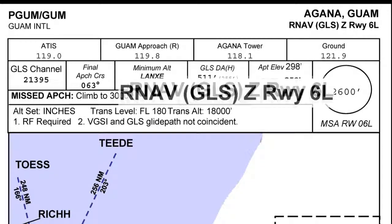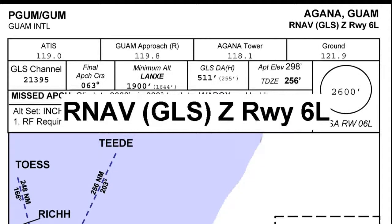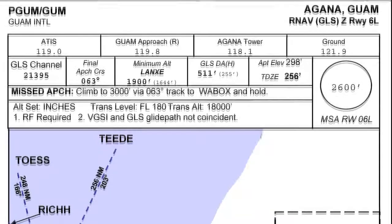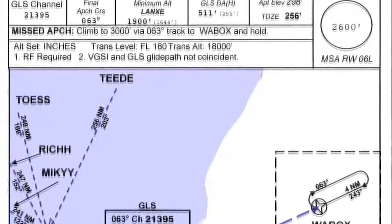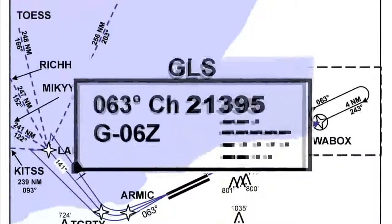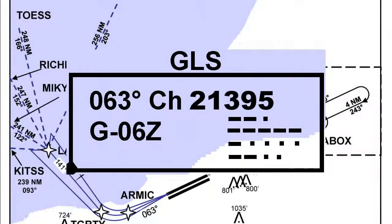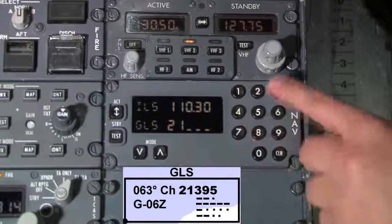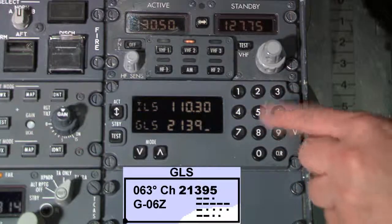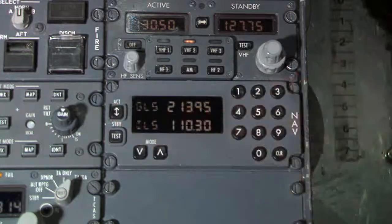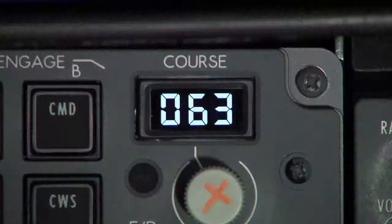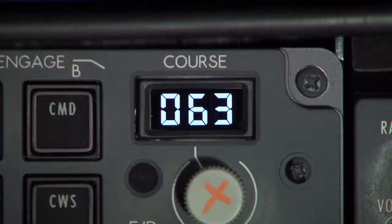Shown here is the GLS curve path approach plate for runway 6L in Guam. The GLS approach is identified with a unique 5-digit identifier, which is entered into the multi-mode receiver and made active. The inbound course is set to a heading of 063, which is standard for an instrument approach.